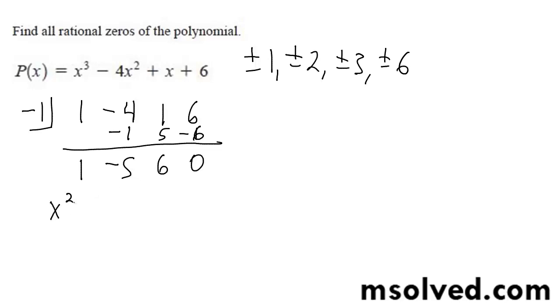So here I've got x squared minus 5x plus 6. Factor this, I get x minus 2 and x minus 3, which means my roots are going to be 2 and 3.